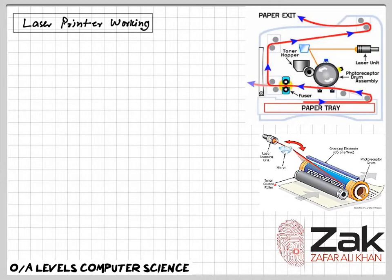Laser printers use dry powder ink rather than liquid ink and make use of the properties of static electricity to produce text and images. Unlike inkjet printers, laser printers print the whole page in one go.